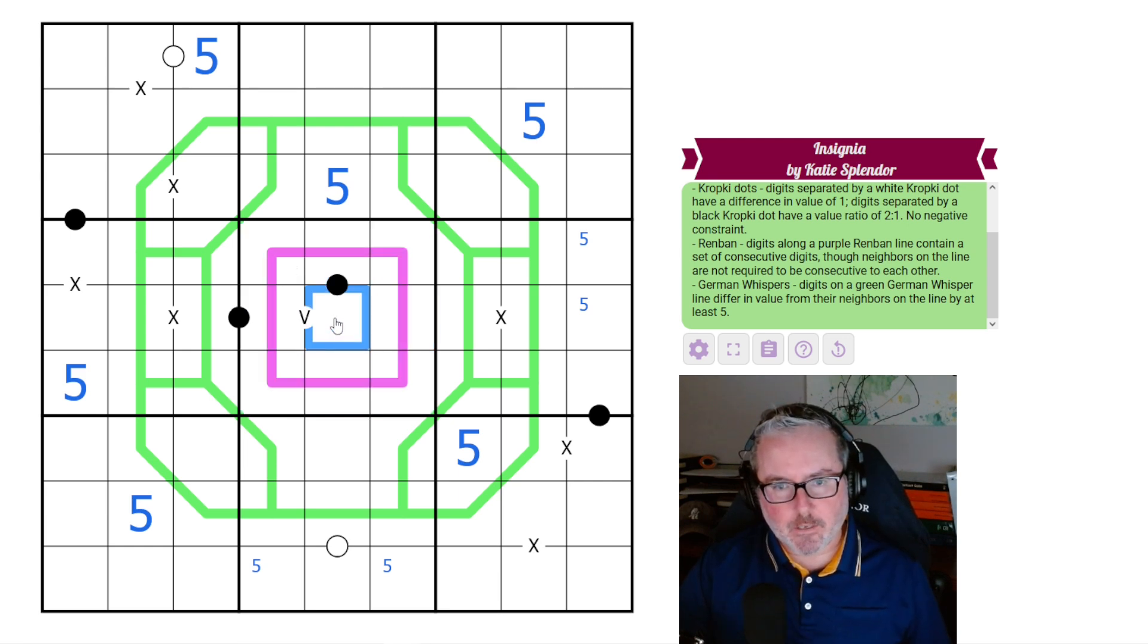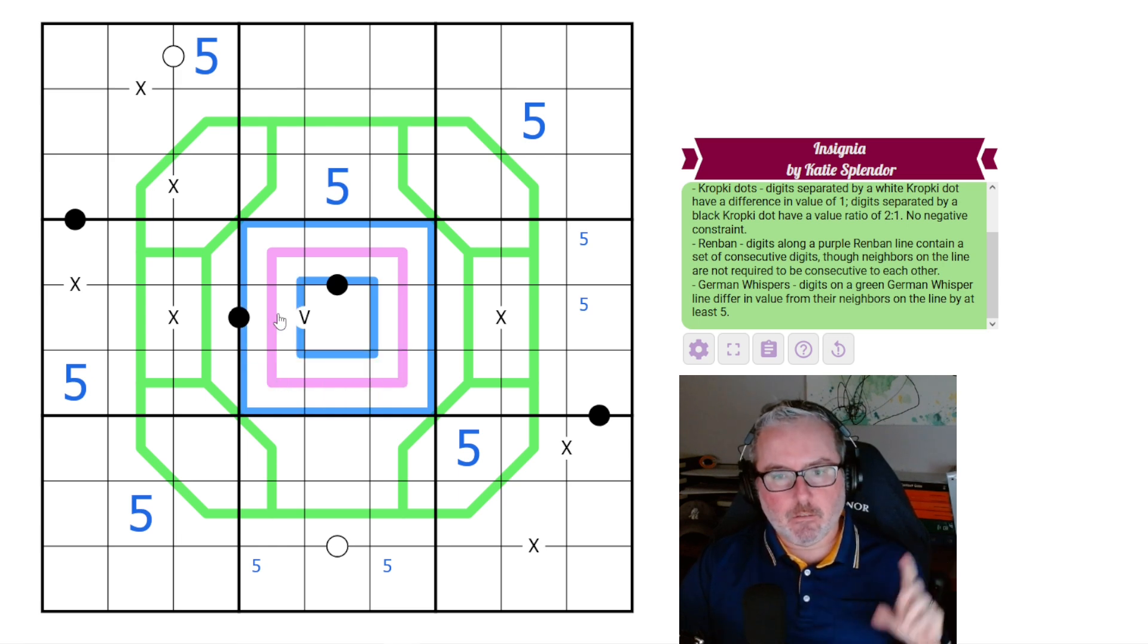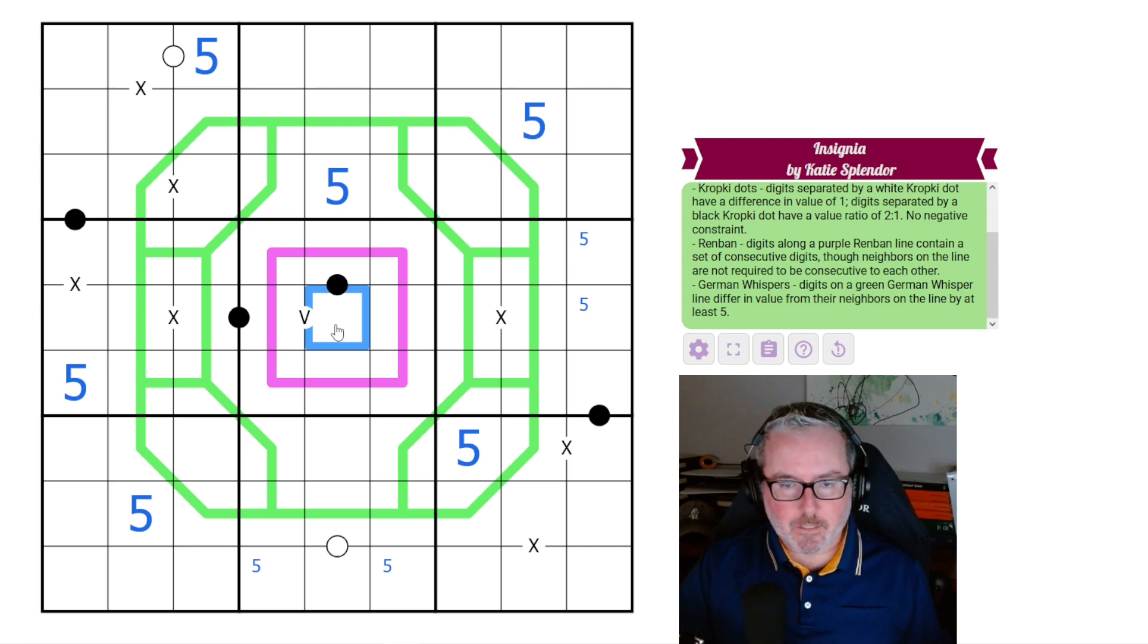The thing is, we know that this central digit is one of the extremes. It's either 1 or 9 because there's no other way to make 8 digits on a renban line with one of the middle digits being missing. So this is either 1 or 9. Well, it can't be 9 because it's on a black kropki dot. So this is 1. Therefore, this is 2. This is 4. This is 2 or 8, which means this is just a straight up 2, 8, 10 clue.